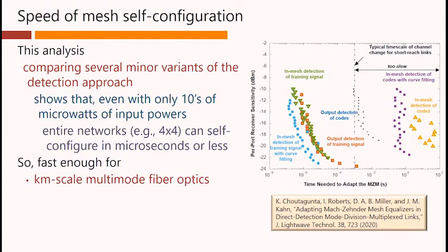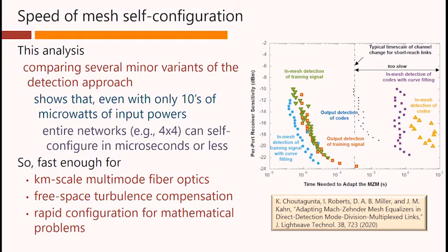So this is fast enough for correcting mode mixing in kilometer-length multi-mode fiber optics, it's fast enough for correcting free space turbulence, and it's fast enough for rapid configuration for many mathematical problems. So we are starting to see that these kinds of meshes can do things we could not do before in optics, including adapting in real time in important problems. This is really a new opportunity, and we are only just now starting to exploit it.